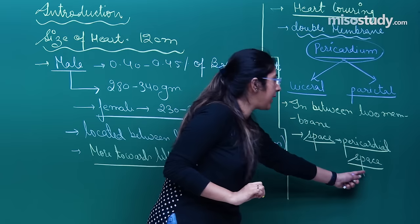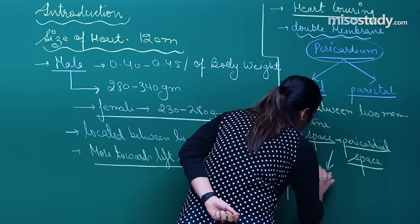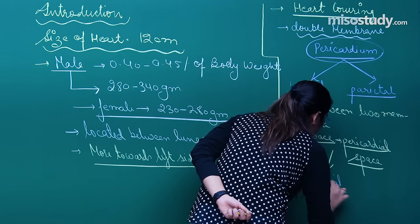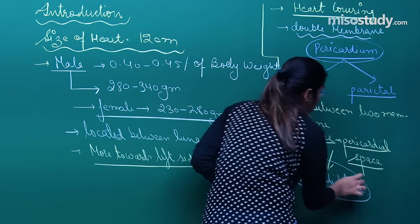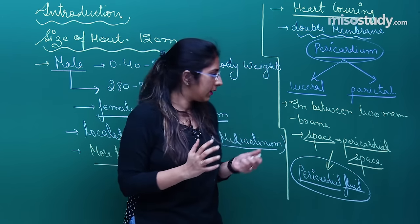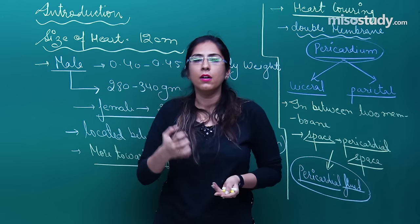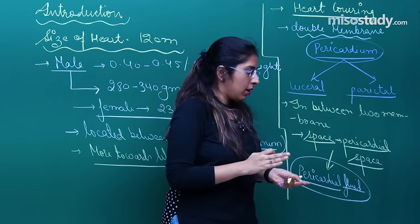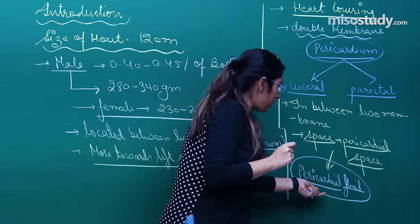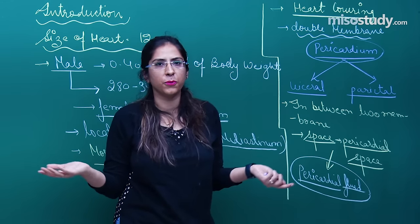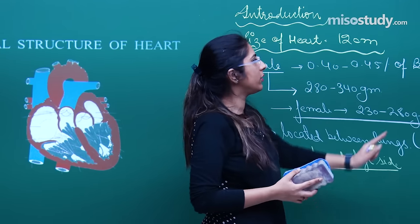The pericardial space has a fluid called pericardial fluid. The function of this pericardial fluid is that it prevents the heart from mechanical damage. Whenever we feel some kind of shock, this pericardial fluid — which is present in between the two membranes — absorbs that shock so that our main vital organ, the heart, will not get affected. So whenever someone says 'my heart is broken,' just ask: do you have pericardial fluid? If you have pericardial fluid, how can your heart be broken?